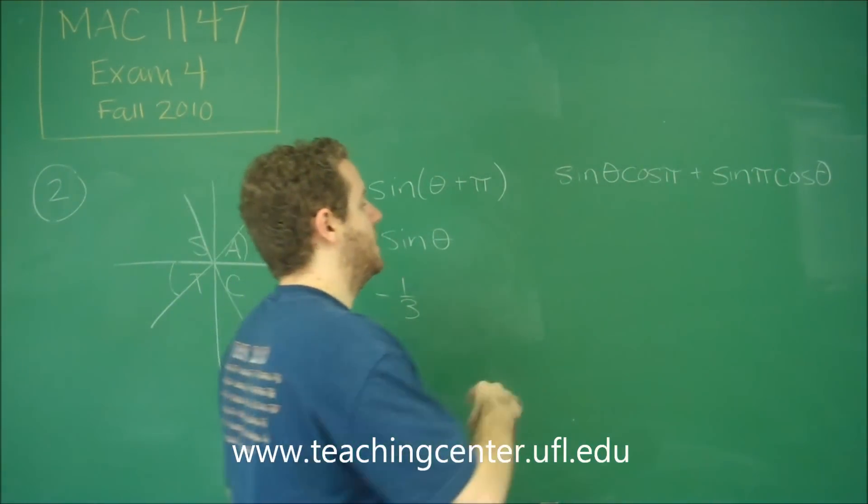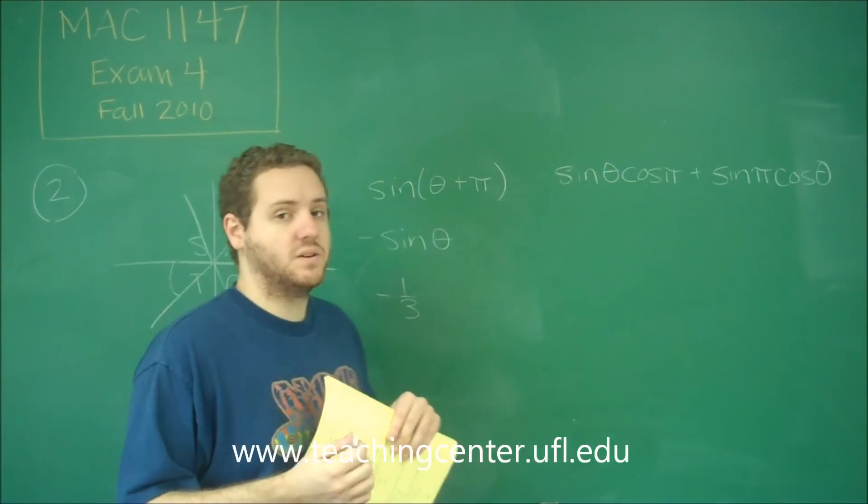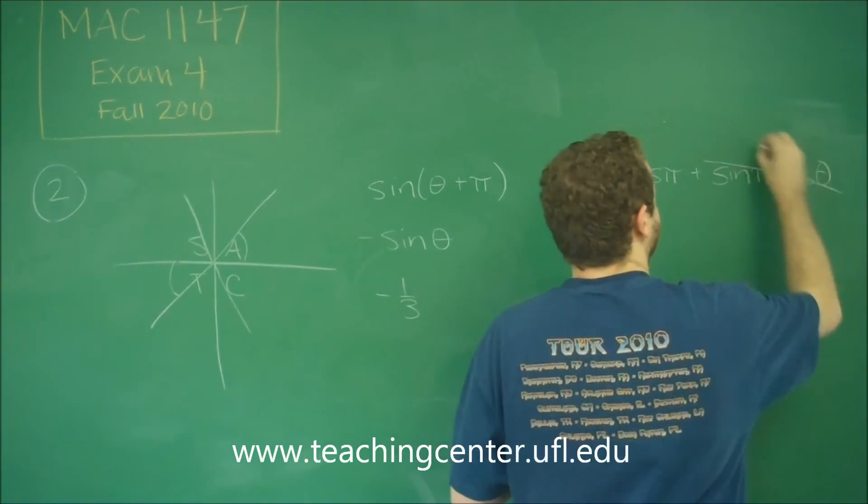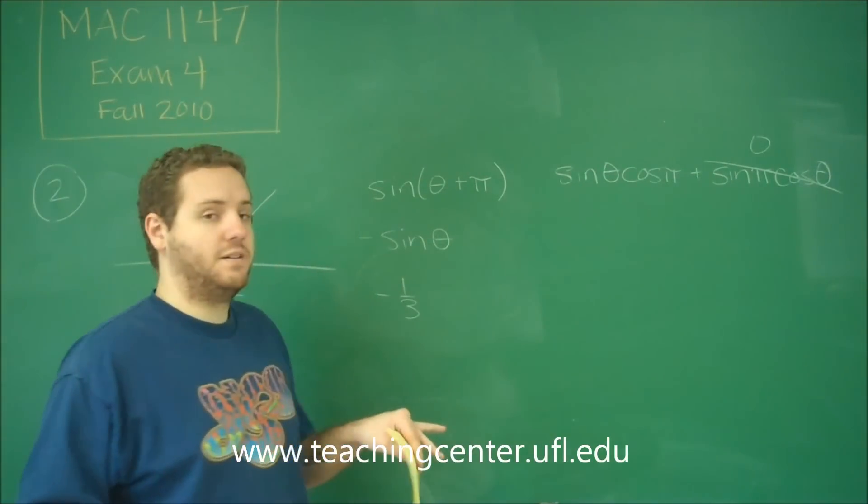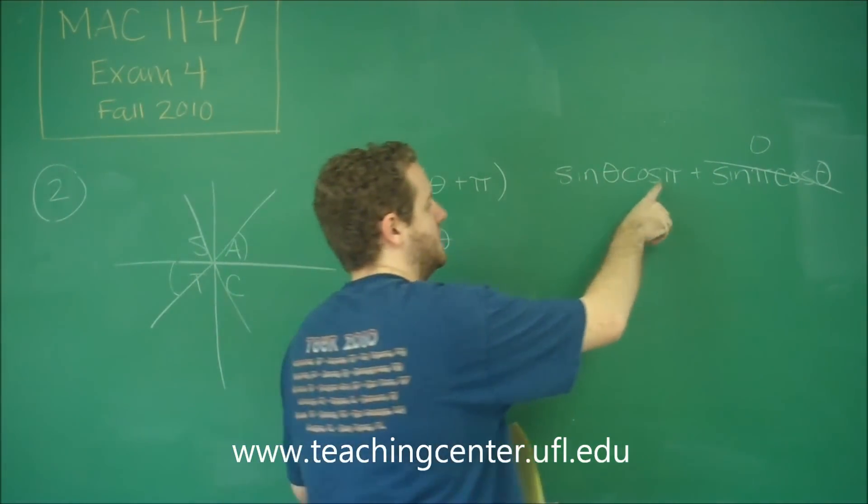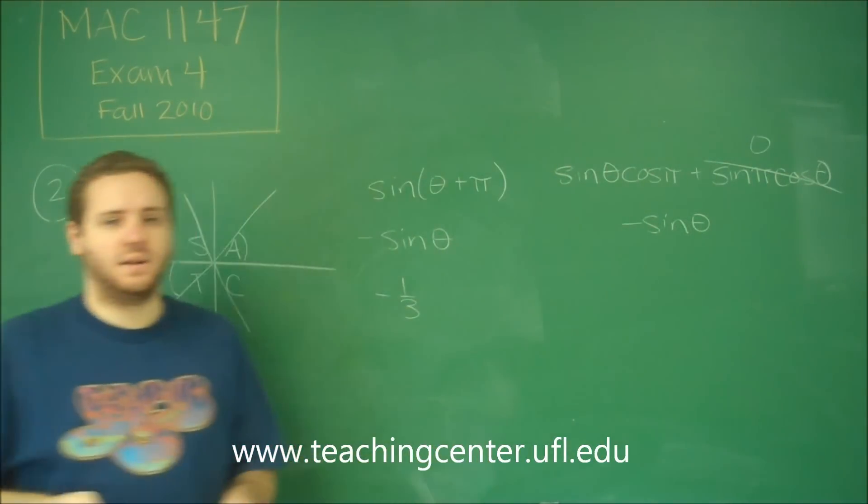Well, the sine theta and cosine theta are dependent on the problem, but the ones with pi's are constant. Sine of pi is zero, so that makes that whole term zero. Cosine of pi is negative one, so we just get negative one times sine theta. Negative sine theta, exactly what we got here.